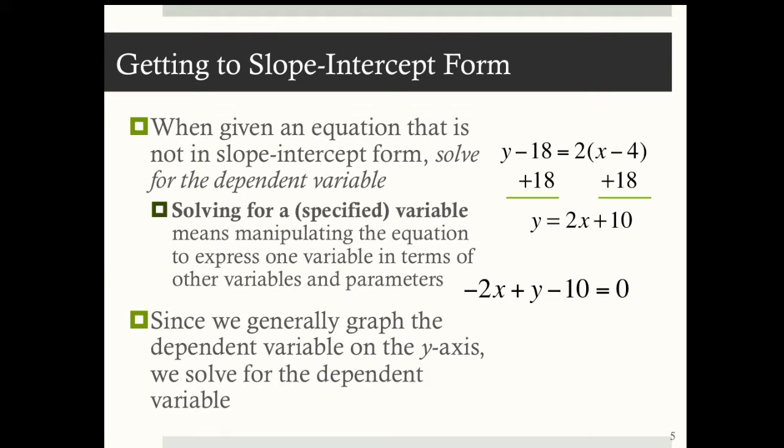Or suppose we're given an equation that looks like this. This is that general or standard form, negative 2x plus y minus 10 equals 0. So again, I'm going to use some algebra to manipulate this equation and get y by itself. So now I'm going to add 2x and 10 to each side, and that will yield y equals 2x plus 10.